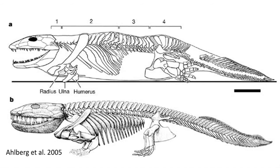Ichthyostega is another early tetrapod from the latest Devonian of Greenland. It resembles Acanthostega but has more elongated femurs, tibia, and fibula in the hind legs, giving greater support for the posterior half of the body. The ribs are also very thick and likely helped in costal breathing of air while on land. The skull is still flat with the eyes on top, indicating it spent most of its time in the water, but had a greater ability to move across the landscape between ponds and rivers. Both the pectoral and pelvic girdles are rather large compared to the limbs, the tail is shorter, and the limbs were likely used for swimming as well as walking in shallow water.